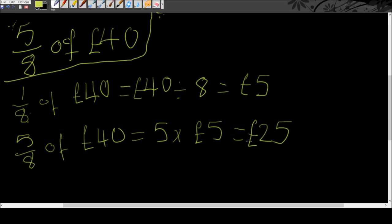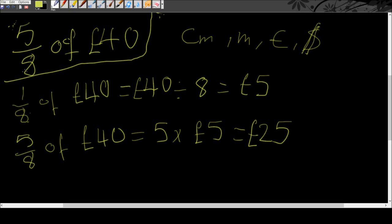That basically sums up finding a fraction of a quantity. Sometimes you'll be given different units — centimeters, meters, euros, dollars — but the method doesn't change. The way you work it out is still the same. So that's fraction of a quantity — I'll see you guys later.